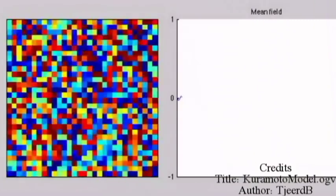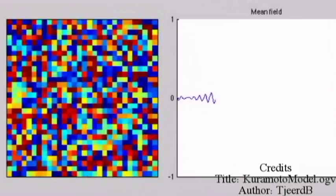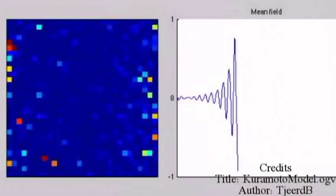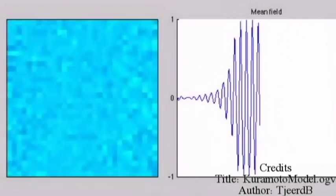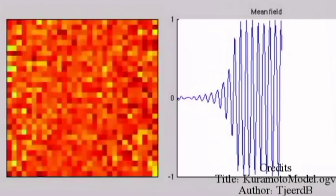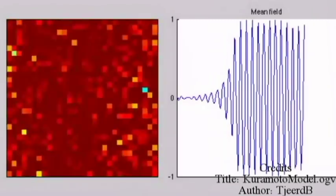In synchronization, we mean that different systems will have identical activities. For example, in this video, you can see a model of our neural activity in the brain. Every activity represents with different colors, and in the end, you see how all the colors are the same.